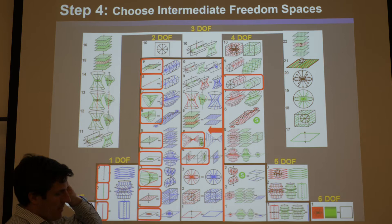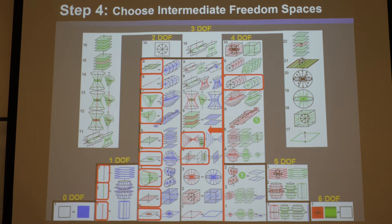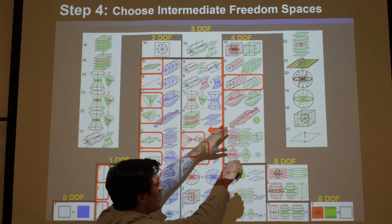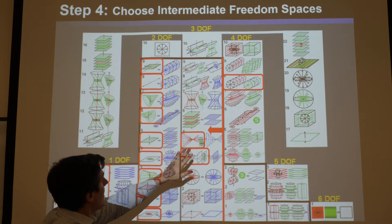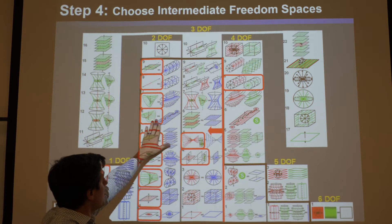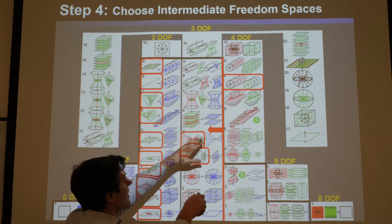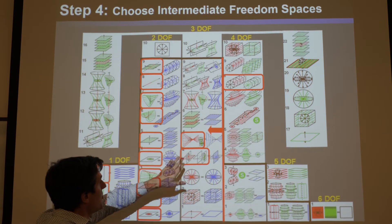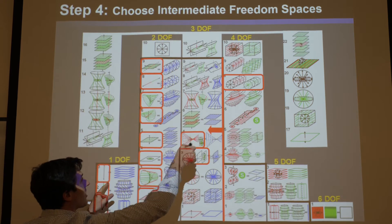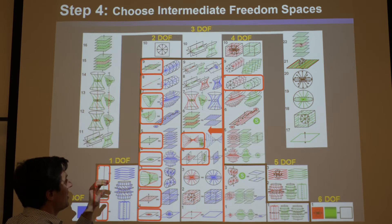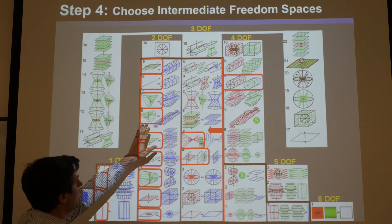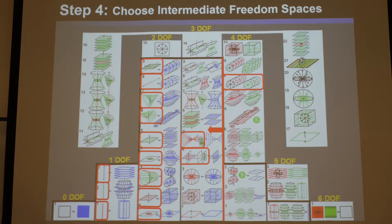You can pick any two, but make sure the two you pick have the right number of degrees of freedom. They not only need to add up to span this space, but must equal the number of degrees of freedom in it. For instance, if you picked one with three DOF, you wouldn't want one with two DOF, because three plus two is five — under-constrained when you want four. Pick one from the 3-DOF column with one from the 1-DOF column: three plus one is four.